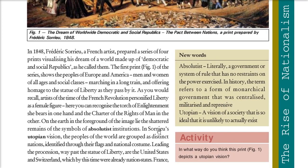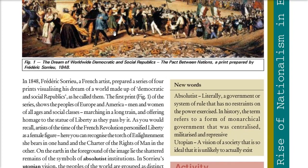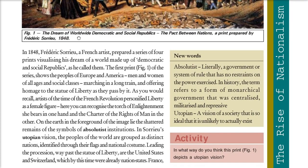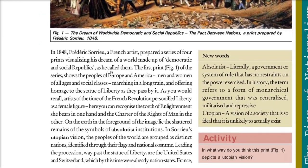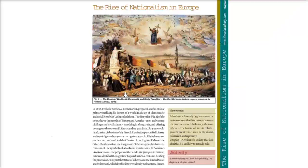Saurio has a utopian vision: the people of the world are grouped as distinct nations, identified through their flags and national costume. The leaders here are the United States and Switzerland — because these states had already become nation states.